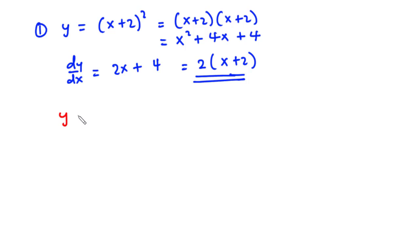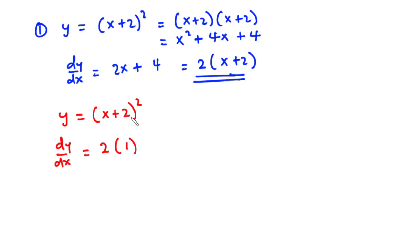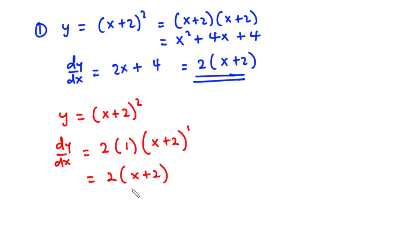Alternatively, if y is equal to (x plus 2) squared, then dy/dx can be found by dropping down the 2, differentiating what's in the bracket — the derivative of x is 1, the derivative of 2 is 0, so 1 plus 0 is 1 — then maintaining the bracket (x plus 2) and reducing the exponent by 1. This becomes 2 times (x plus 2), the same answer as before. This alternative approach is especially useful when the exponent is very large, since expanding can be confusing.